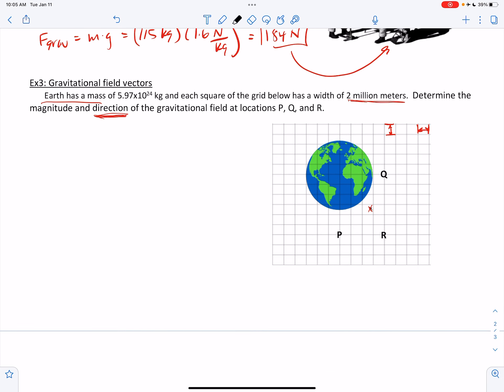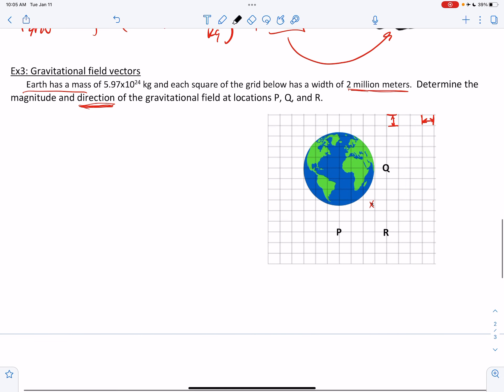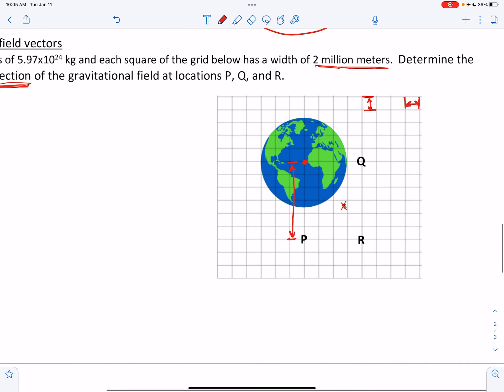So starting with P, let's first figure out how far away P is from the center of the Earth. So here's the center of the Earth, and I want to know this dimension from the center of the Earth to P.